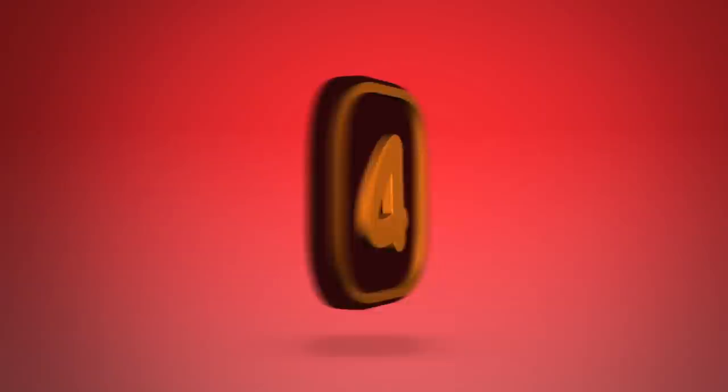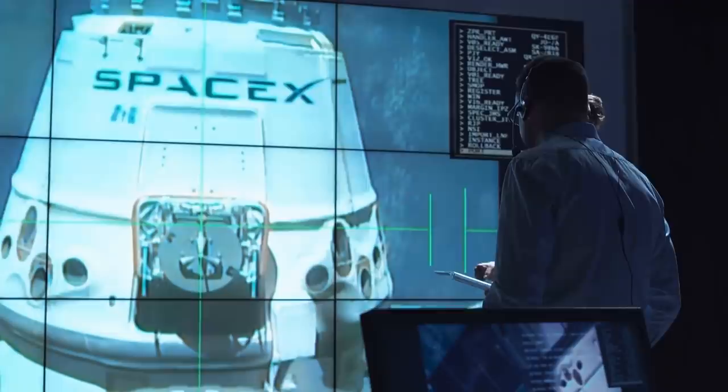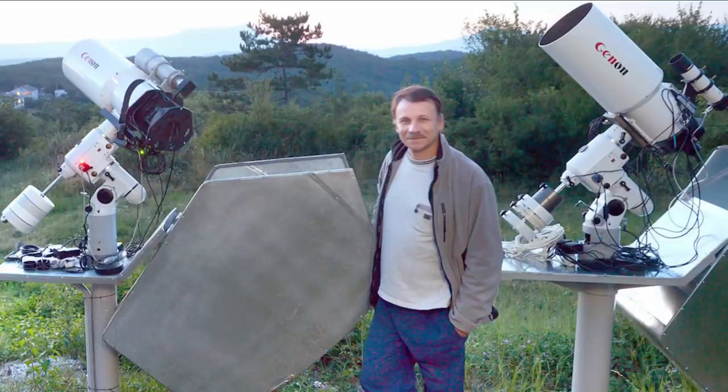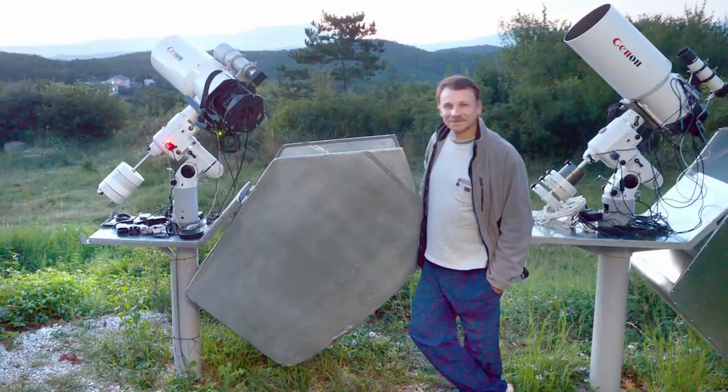How did we discover 2i Borisov? So everyone involved in space programs are marveling at this very special interstellar object. But where and when did we exactly discover that this thing was even close to us? Well, that would be on August 30th, 2019, by amateur astronomer Gennady Borisov at his personal observatory, Margo.